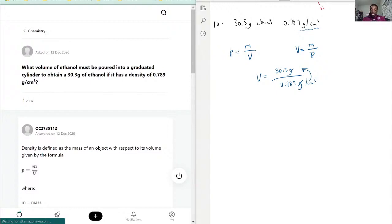In regards to that now, we have 30.3 divided by 0.789, so that'll be 38.4, if we're going to round the same way, centimeter cubed for the volume.